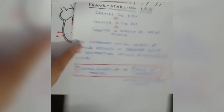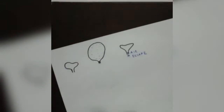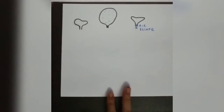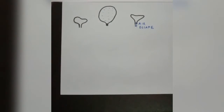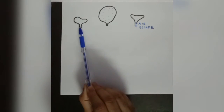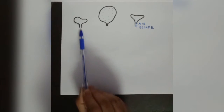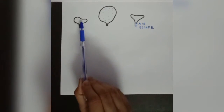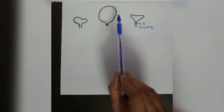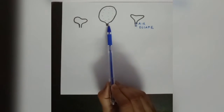We can illustrate this with a balloon example. If we take a balloon representing the ventricle of the heart and fill it with air representing blood — the balloon starts in a relaxed state. We then start to fill air in, fill it completely, and close it with a knot.